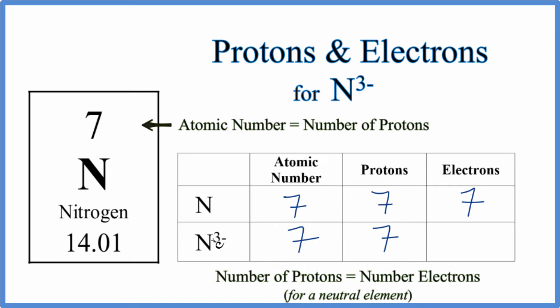For the ion, the electrons will be different. Here we have a 3-. Electrons are negative, so you can think of this as three extra electrons. That's what gives us the 3- ionic charge. So we have seven plus the extra three, which gives us 10 electrons for N3-.